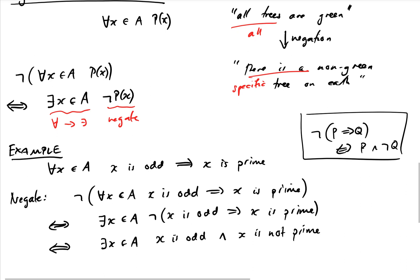You could probably have arrived at that intuitively without working through the mechanical steps, because the statement says every odd number in the set is prime, so to disprove it you just find an odd number in the set that isn't prime. But when you have three or four quantifiers and a complicated expression inside, working mechanically in symbols — just flip all quantifiers and negate the inner statement — is much easier and doesn't require a huge mental workout.